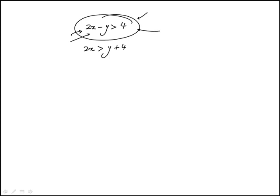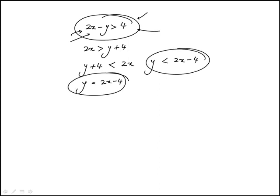This becomes 2x is less than y plus 4. I can rewrite it in that form. So this means y is less than 2x minus 4. The equation of the line that this inequality corresponds to is y equal to 2x minus 4.